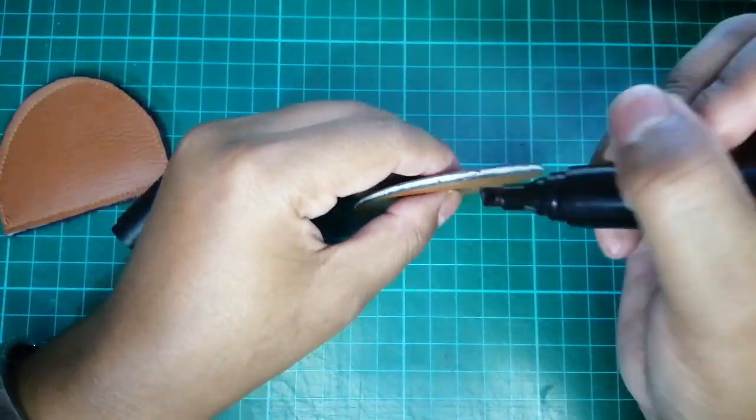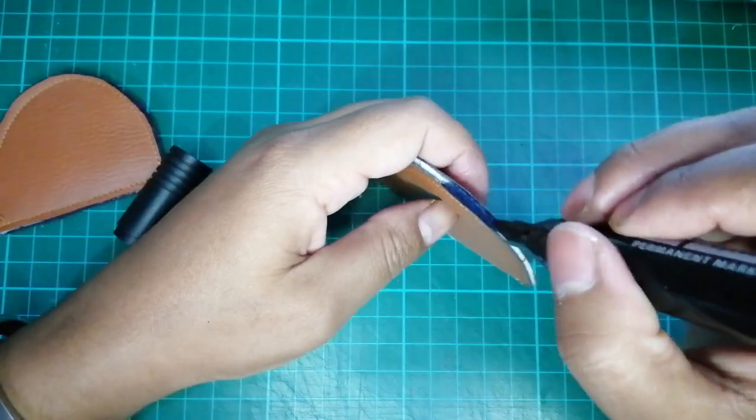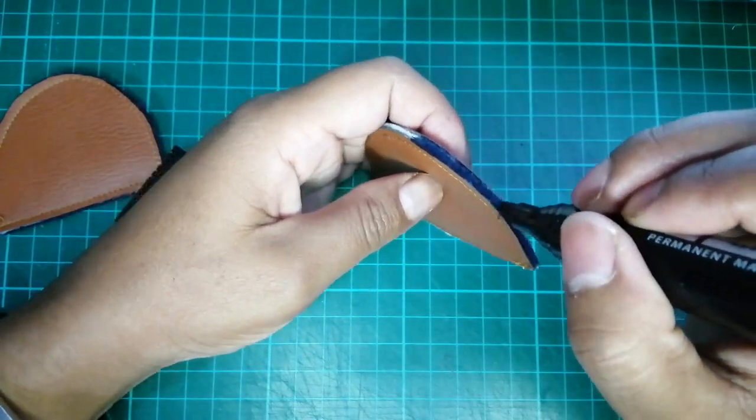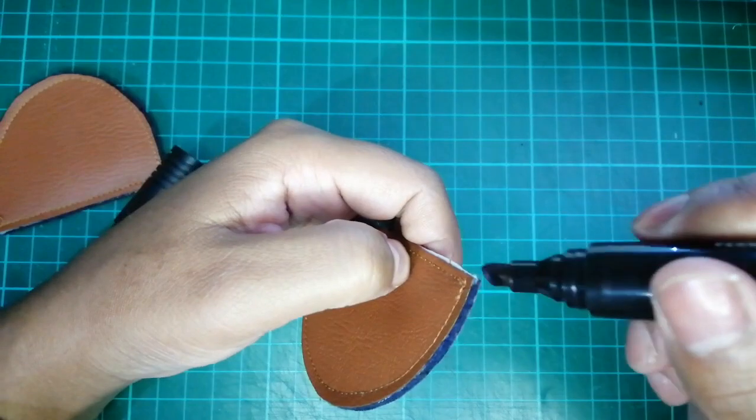As my felt was yellow, I used a black marker pen to color in the edges and went over it with a clear nail polish to prevent the ink from bleeding onto the outer material.